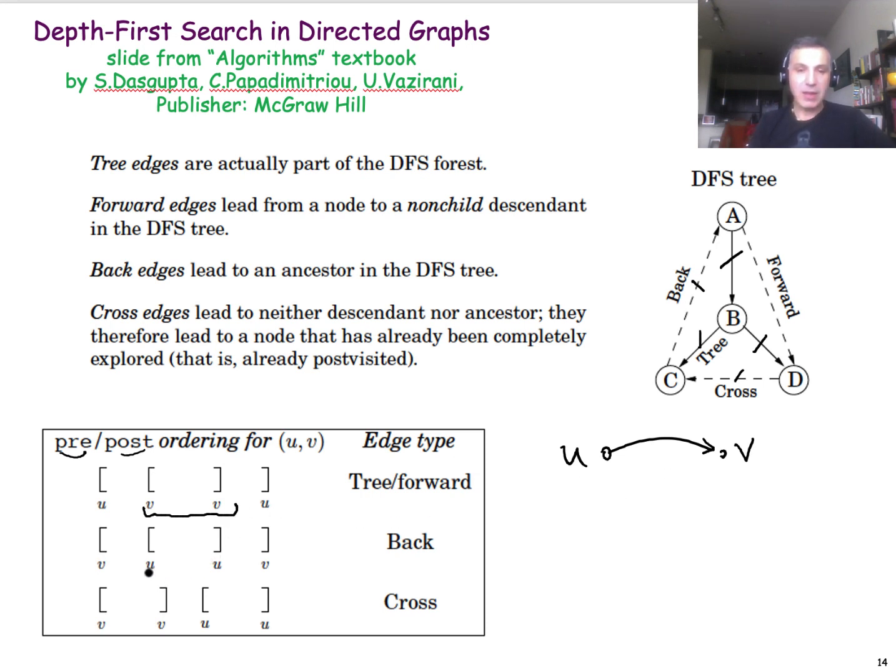If, on the other hand, the pre- and post-interval of U is completely contained in the pre- and post-interval of V, then the edge is a back edge. And finally, if the two intervals are completely disjoint, then that is a cross edge. We have visited and explored V earlier than U, and so this edge from U to V is a cross edge.